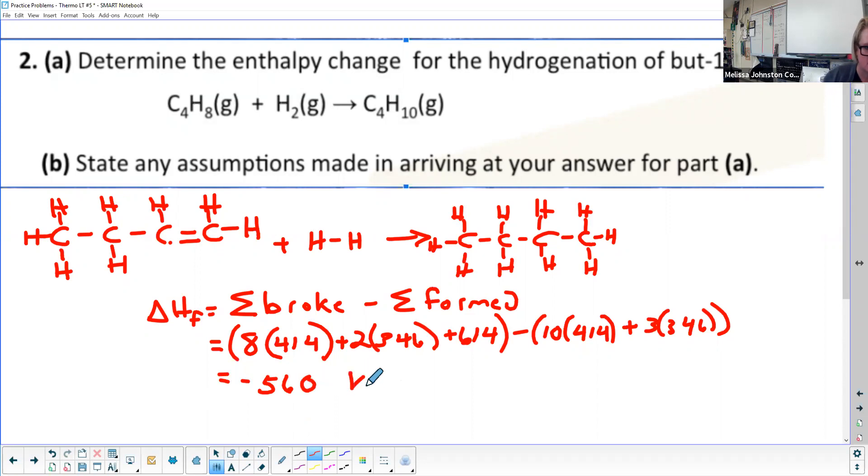And another exothermic process has happened. By the way, most of these are going to be exothermic: negative 560 kilojoules per every mole of butane formed.